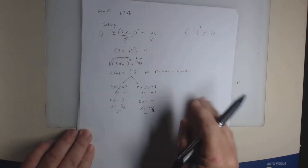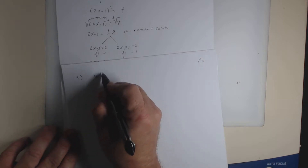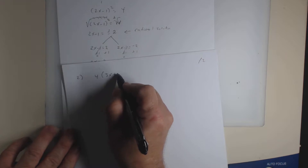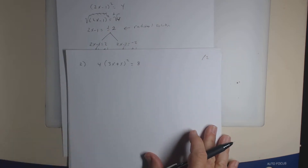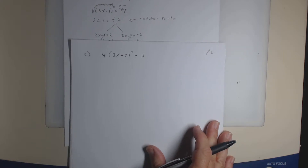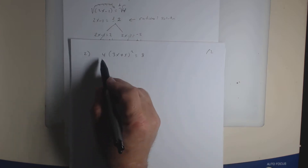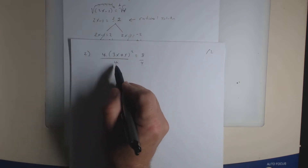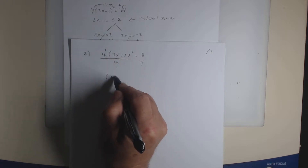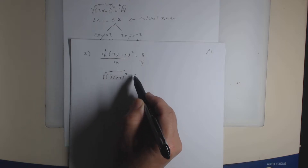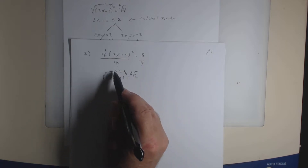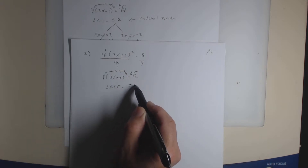Now let's look at number 2. Suppose you had 4 times (3x plus 5) squared equals 8. So what are you going to do? Divide by 4 — the 4s divide out. You're left with (3x plus 5) squared equal 2. Then take the square root of both sides, plus or minus. The square root and the square cancel each other. You get 3x plus 5 equal plus or minus the square root of 2.